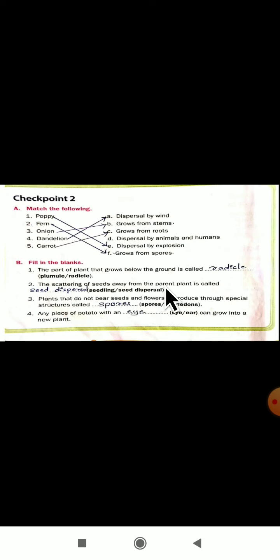The second fill in the blanks — the scattering of seeds away from the parent plant. The seeds scatter from the parent plant — for that what are we calling? We are calling it seed dispersal. If the seeds scatter from the parent plant, then it is called seed dispersal.